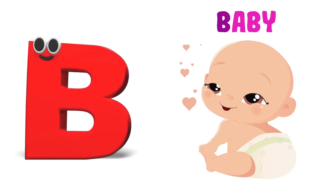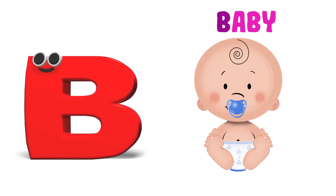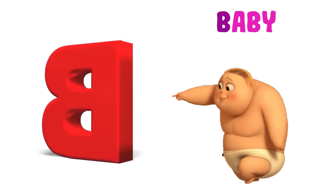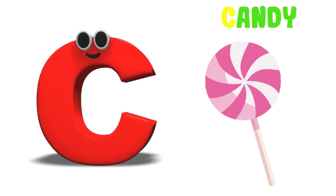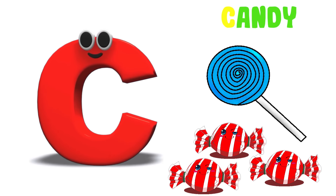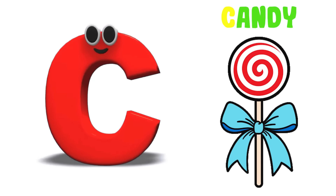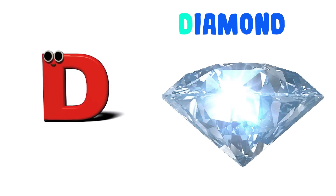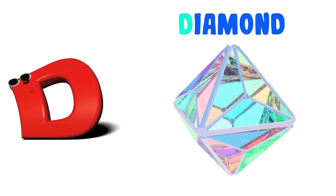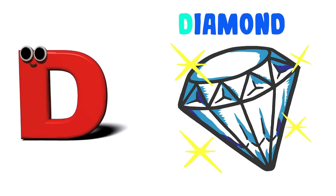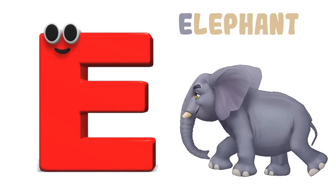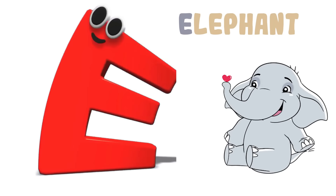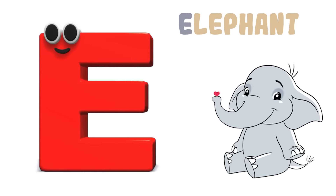B is for Baby. B-B-Baby. B-B-Baby. B-Baby. C is for Candy. C-C-Candy. C-C-Candy. C-Candy. D is for Diamond. D-D-Diamond. D-D-Diamond. D-Diamond. E is for Elephant. E-E-Elephant. E-E-Elephant. E-Elephant.